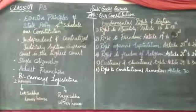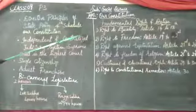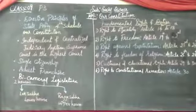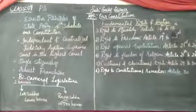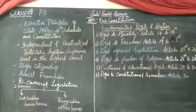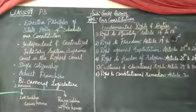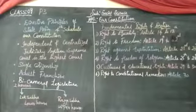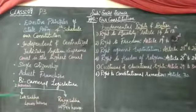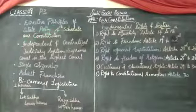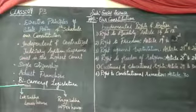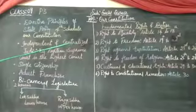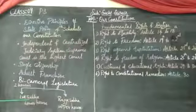Now let us move to fundamental rights and duties. Before independence, we had no rights — rights belonged only to the British. After gaining independence, the constitution was framed. With a committee of 22 members and 5 sub-committees, Dr. B. R. Ambedkar beautifully described the articles. The first is the Right to Equality — all are equal before the law. This is covered under Article 14 to 18.